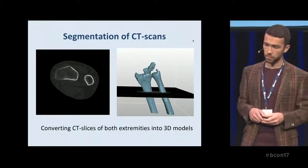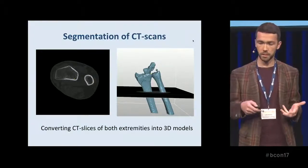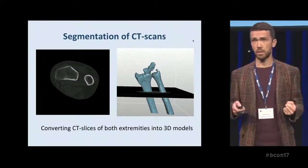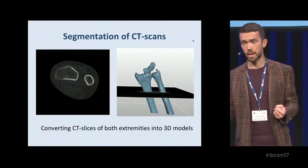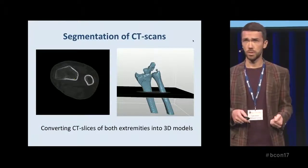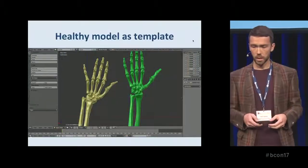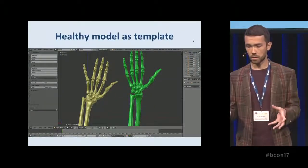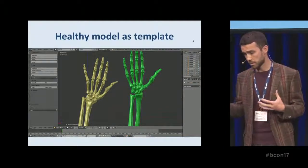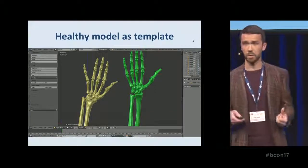Before we start working in Blender, we need material to work on. We make CT scans of the affected hand, leg, or arm, and then convert those into 3D surface models using specialized software. The healthy model serves as a template that we can use to restore the anatomy of the affected one.